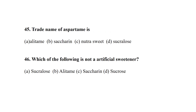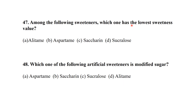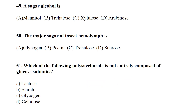MCQ number 45: the name aspartame refers to a neutral sweetener. Which of the following is not an artificial sweetener? Glucose is not an artificial sweetener. Among the following sweeteners, which one has the lowest sweetness value? Aspartame has the lowest sweetness value among the options. Which artificial sweetener is a modified sugar? Sucralose is a modified sugar.